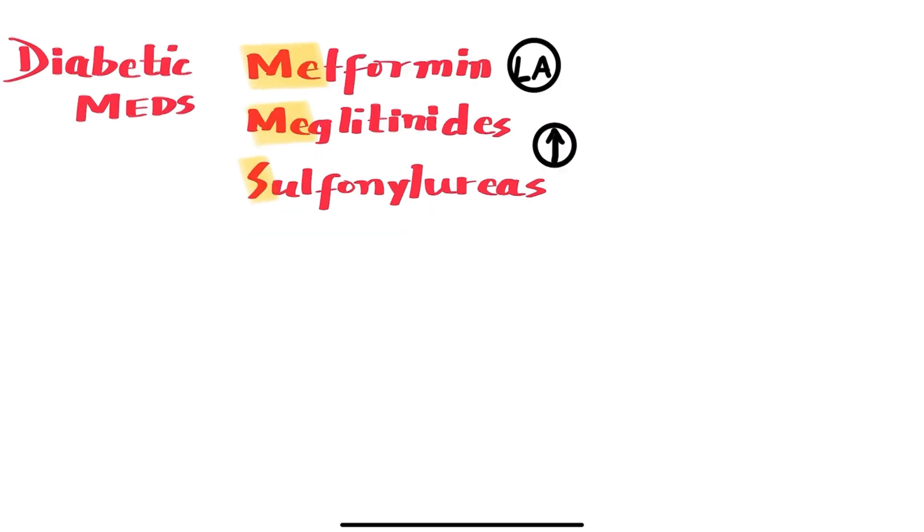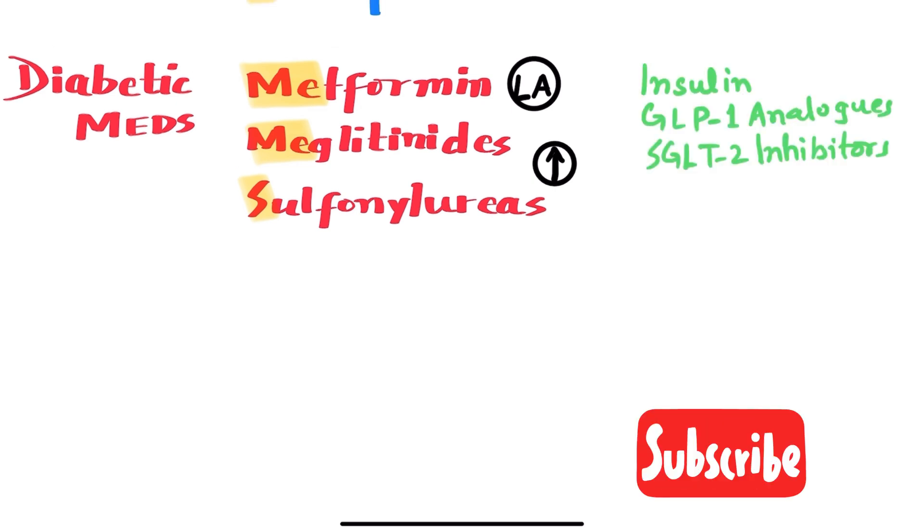M-E also stands for meglitinides, and S stands for sulfonylureas. Both of these drugs should be avoided as they are metabolized by the liver. So how should we manage diabetes in these patients? There are a few options. Number one is insulin, but the dose should be decreased since the cirrhotic patients have poor appetite and eat less. Another option is GLP-1 analogs, and the third option is SGLT-2 inhibitors.